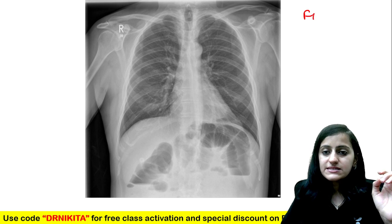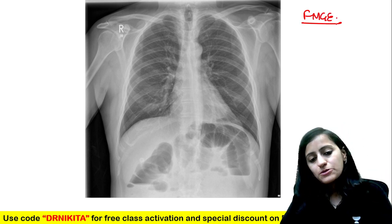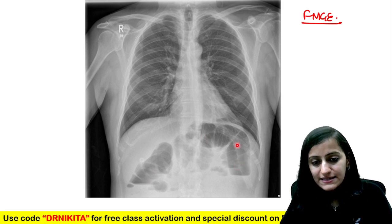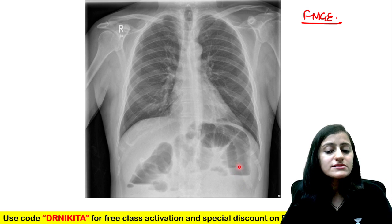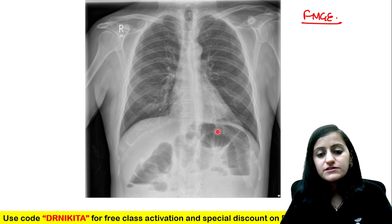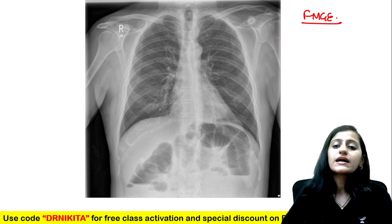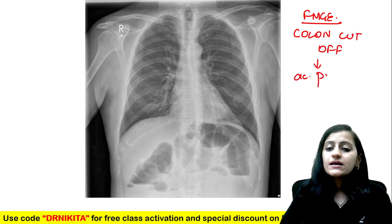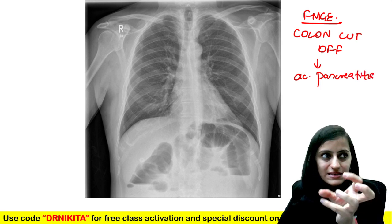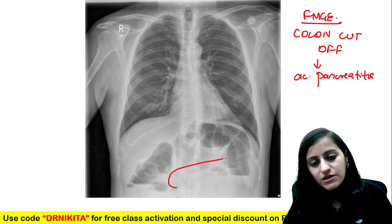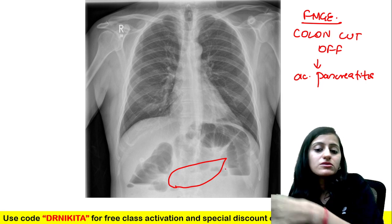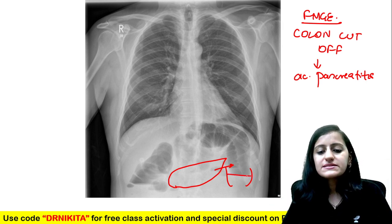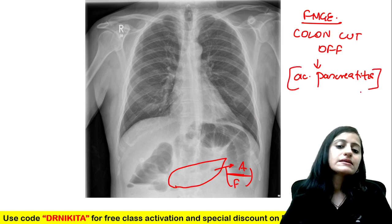The next image, which was asked in a recent FMGE exam: we see air in the bowel along the transverse colon, and suddenly the air is cut off on the left side with an air-fluid level — beyond this point there is no air. This is called the colon cutoff sign. While not specific, it is classically associated with acute pancreatitis, where inflammation travels through the phrenicocolic ligament to the left-sided colon, causing localized ileus and the air-fluid level.